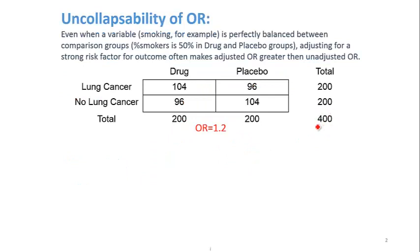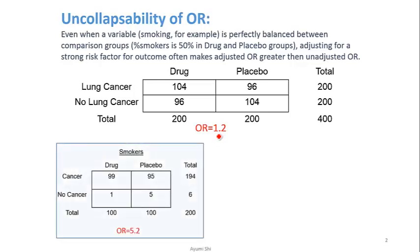Consider this scenario: 400 patients, with 200 randomized to drug and 200 to placebo. Fifty percent of patients have lung cancer. The crude odds ratio from this two-by-two table is 1.2. Of those 400 patients, 200 are smokers. Fifty percent of the drug group and fifty percent of the placebo group are smokers, so smoking is perfectly balanced between drug and placebo groups — as expected from randomization.